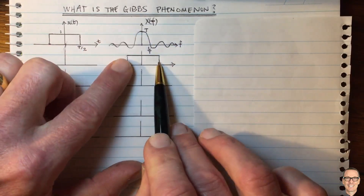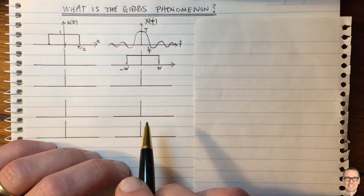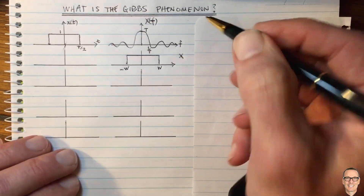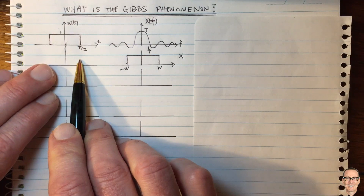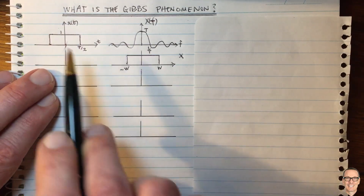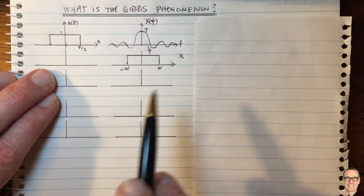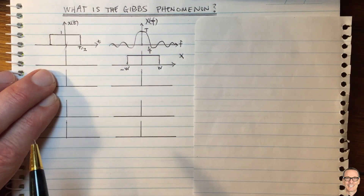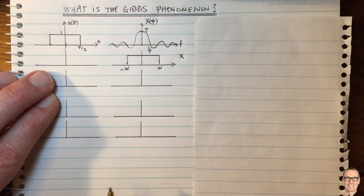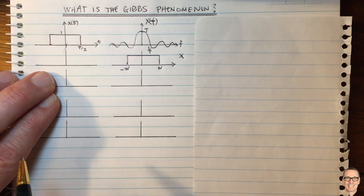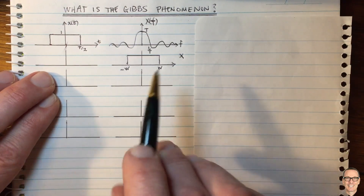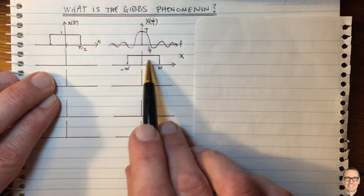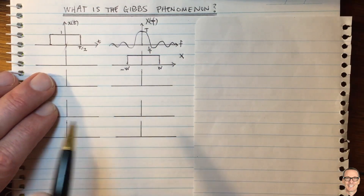So we're multiplying these two functions in the frequency domain. If we multiply in the frequency domain, then we convolve in the time domain. If we multiply these two in the frequency domain, then we get this convolution in the time domain.